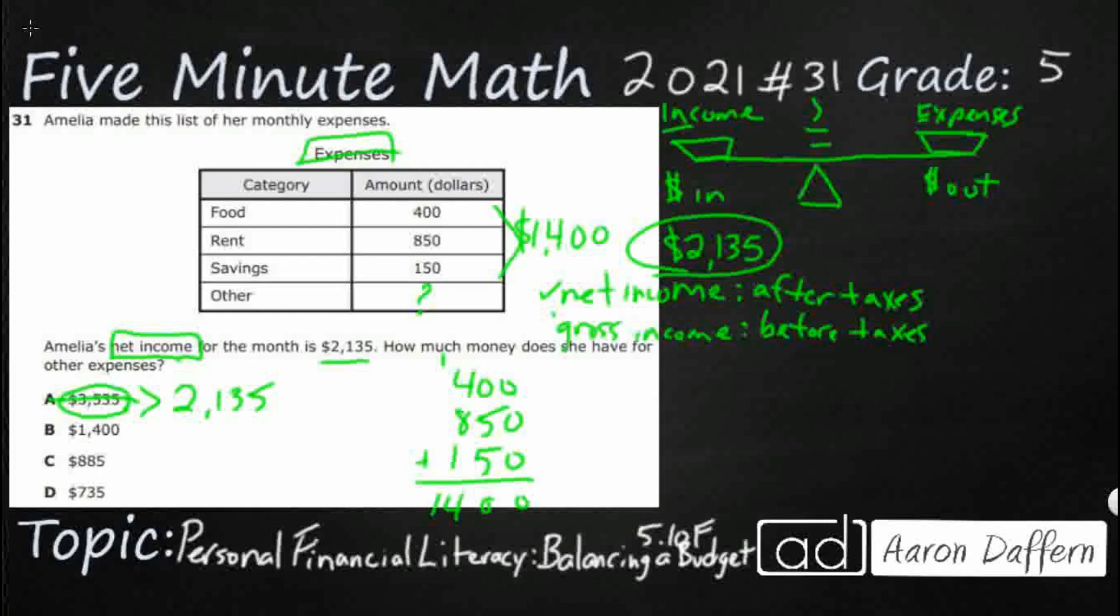So right now it's an imbalanced income, or imbalanced budget, because her income is greater than her expenses. So she wants to add this other category, and she wants to get it to be equal.